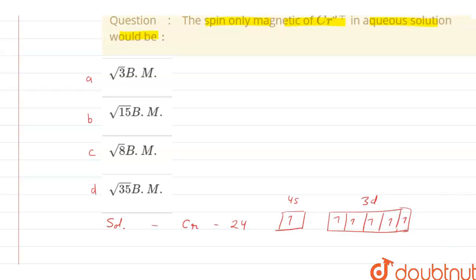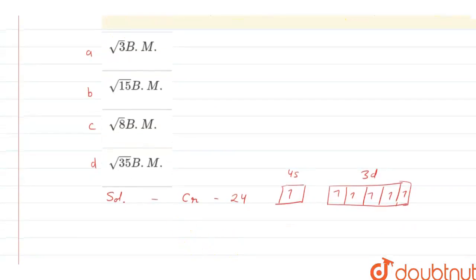Now, as in the question it is said that chromium is present in the plus 3 oxidation state, we can see that in the plus 3 oxidation state, as it was earlier D5 system, now as it is in the plus 3 oxidation state, its 4s orbital would be empty.